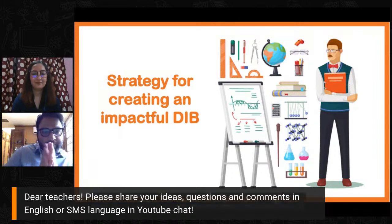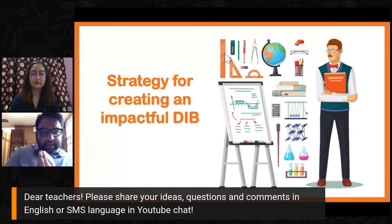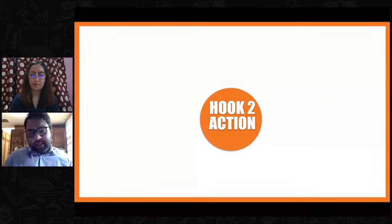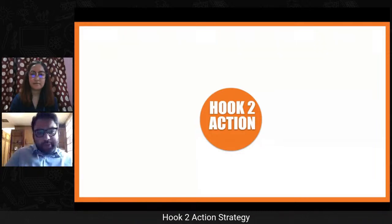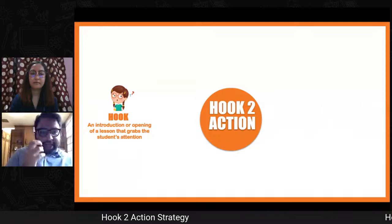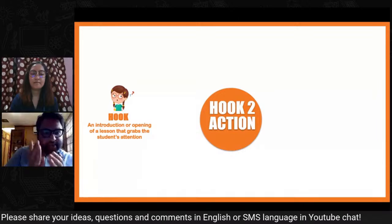Before we get into the nuts and bolts of creating the Google Form DIB, we would like to introduce a strategy to ensure the digital interactive book is impactful and interesting — called the hook-to-action strategy. It is a five-step strategy. The very first step is the hook — right at the beginning of the digital interactive book, there should be content that can hook the attention of the student immediately, especially now when students are away from the teacher in the home learning environment.